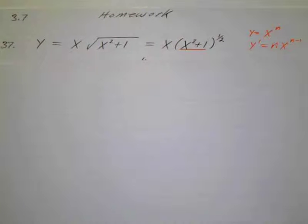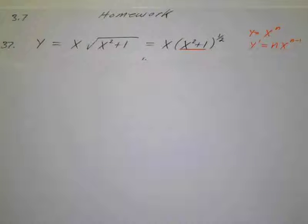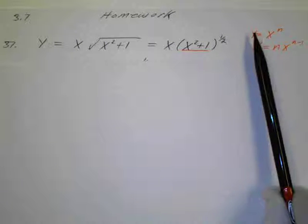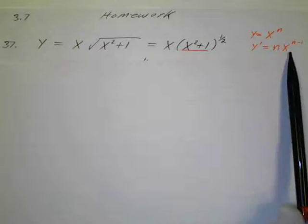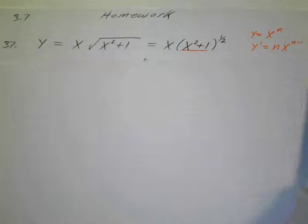More of section 3.7, and again we're just using the power rule expanded to include rational or fractional exponents. I rewrote it over here: if y equals x to the n, then y prime equals n times x to the n minus 1.